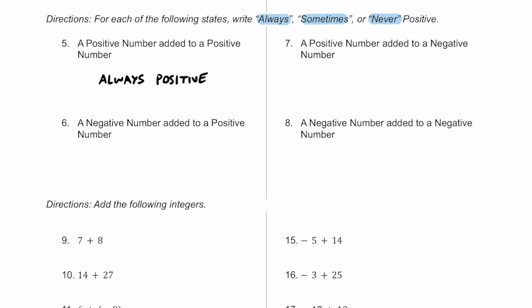For number 6, a negative number added to a positive number is going to be sometimes positive, because it really depends on which number has a greater absolute value. For example, negative 7 plus 5 equals negative 2 since negative 7 has a greater absolute value, but negative 5 plus positive 7 equals a positive number since 7 has the greater absolute value.